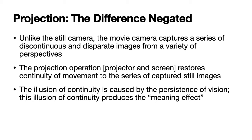A still camera captures a single still image. But unlike that, the movie camera captures a series of discontinuous and disparate images, separate images from a variety of perspectives. And it is the projection operation — that is the projector and the screen projecting the images onto the screen — which restores the continuity of movement to the series of captured still images.